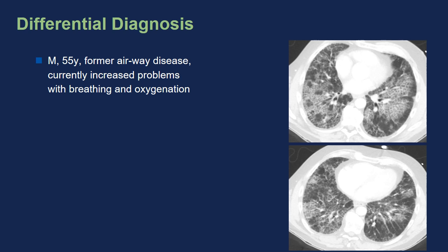Looking at differential diagnoses, I present a 55-year-old male with prior airway disease and currently increased problems with oxygenation. Here we also see reticulation from intra- and interlobular septal thickening, with totally normal secondary lobules adjacent, and ground glass opacity visible on both sides. In this patient we are dealing with an influenza A virus infection, which can also lead to the appearance of crazy paving.